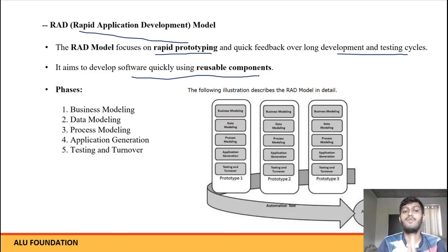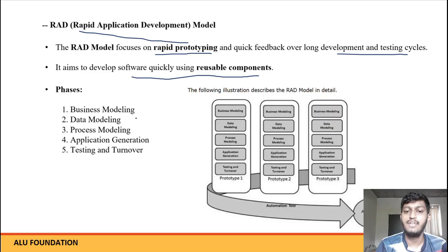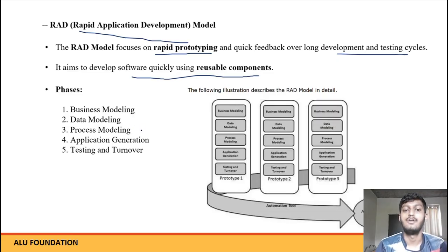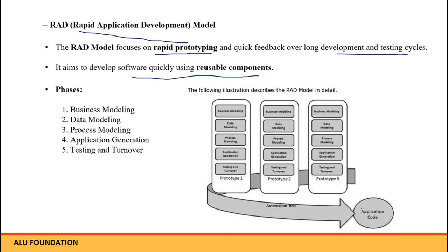It aims to develop software quickly using reusable components. RAD model mein 5 phases hote hain — yahi phases aapko likhne hote hain: pahle business modeling, phir aata hai data modeling, phir aata hai process modeling, fourth is application generation, and fifth one is testing and turnover.